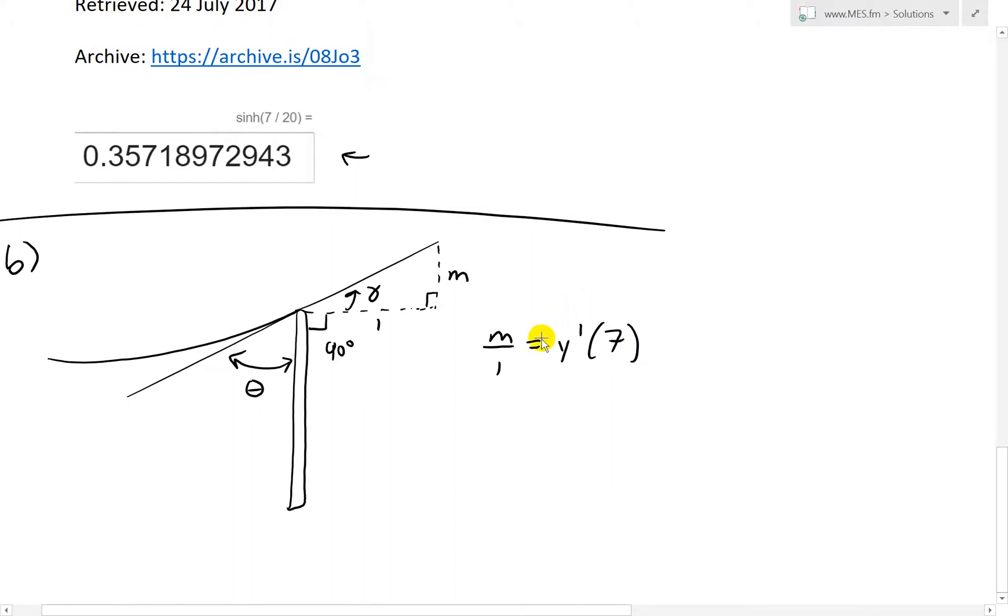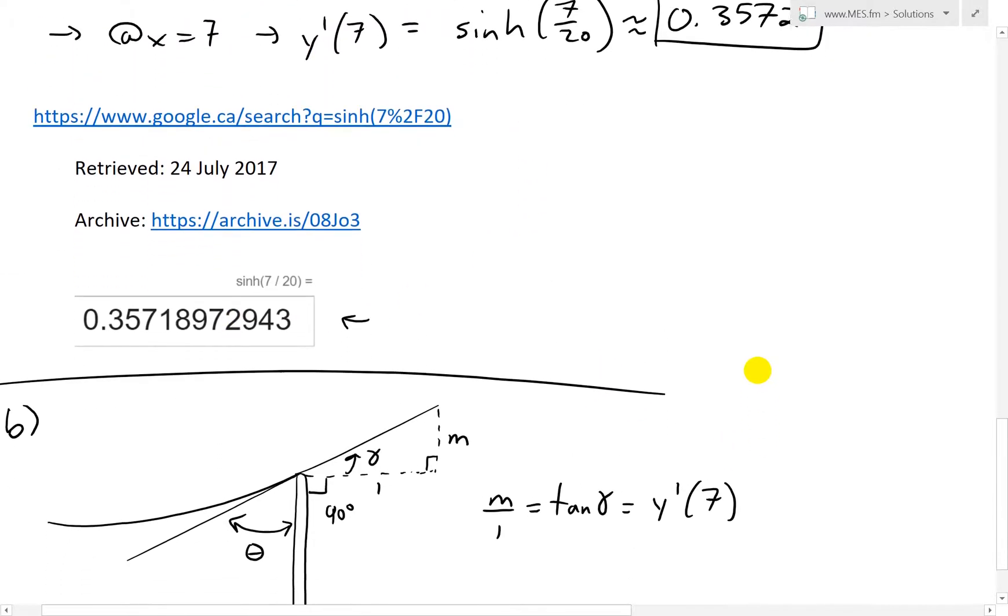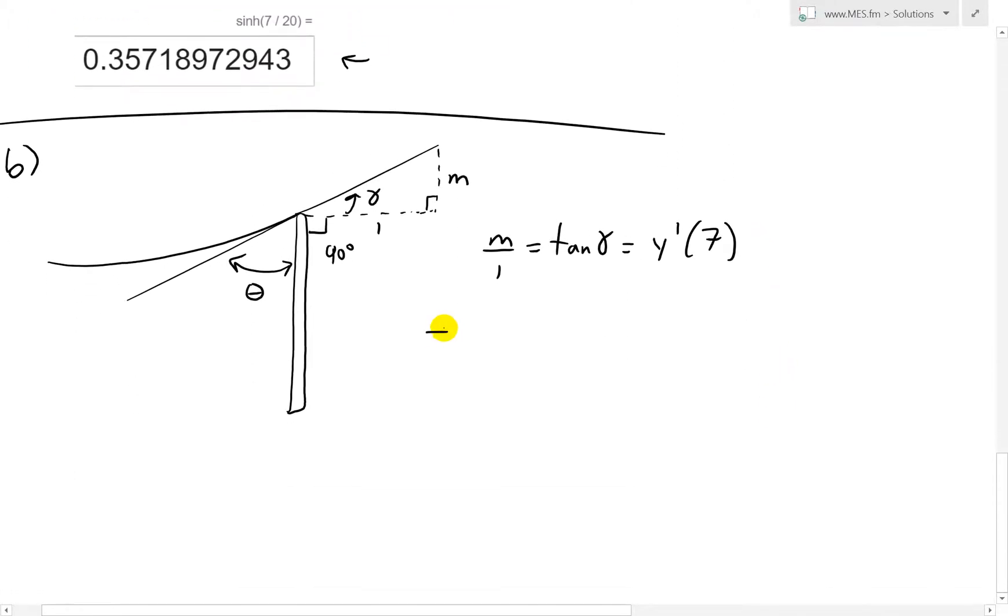But not only that, it also equals the tangent of this or the trigonometry opposite over adjacent. That's just tan alpha. And that equals the slope as well. So M over 1 equals tan alpha equals the slope at X equals 7. And we know this value, that's just sinh 7 over 20. So we get tan alpha equals sinh 7 over 20.